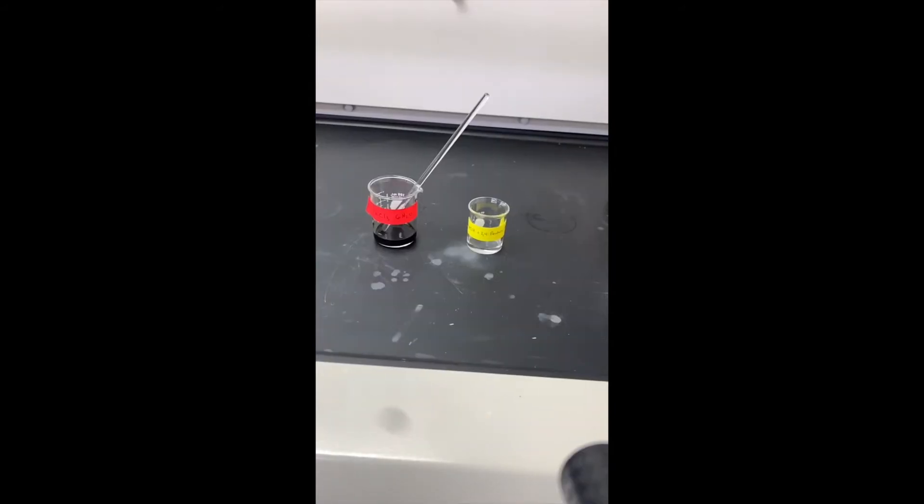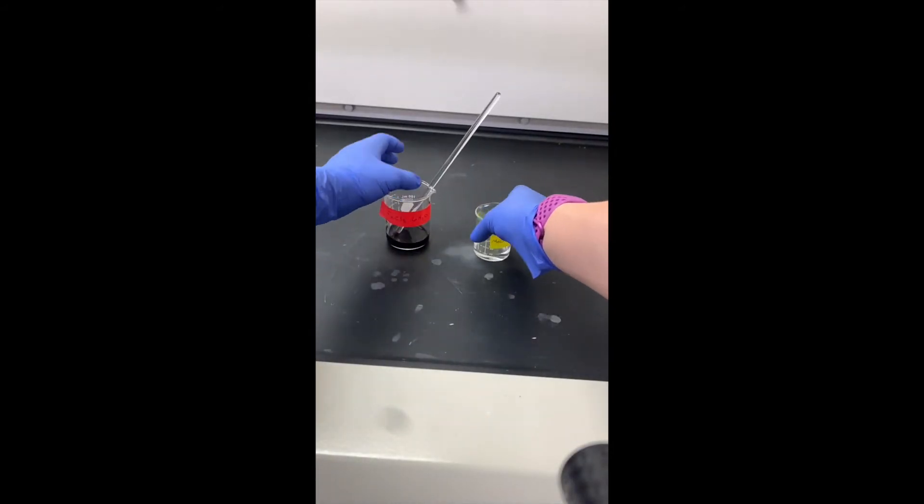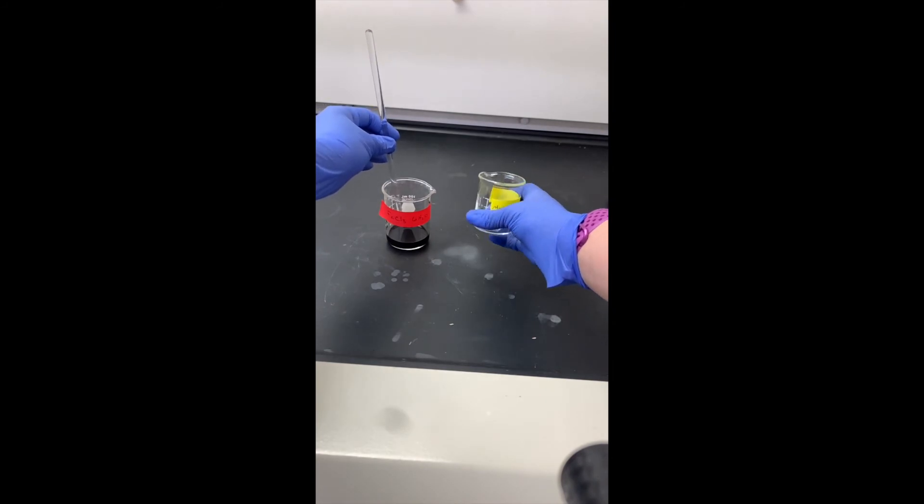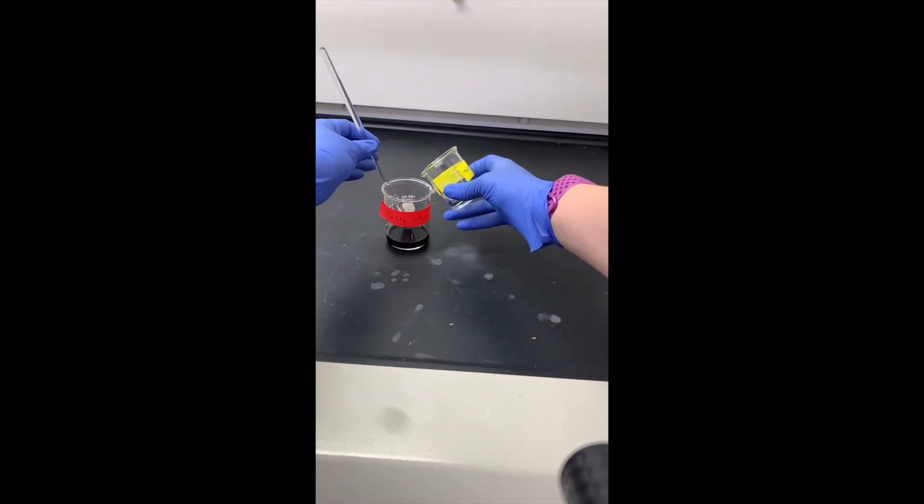Now I will add the 2,4-pentanedione methanol solution to the sodium acetate iron(III) chloride solution while stirring. I will then continue to stir the solution for 5 minutes.